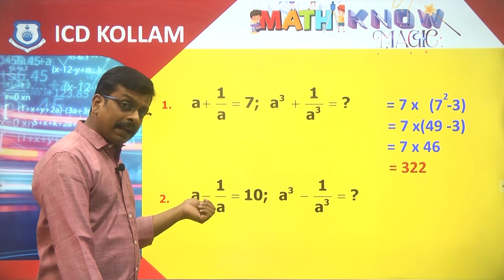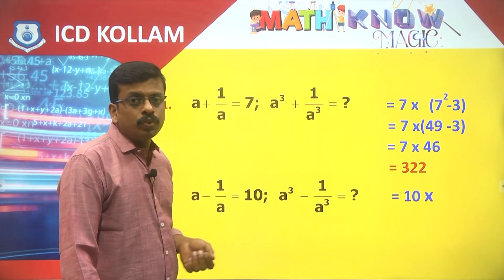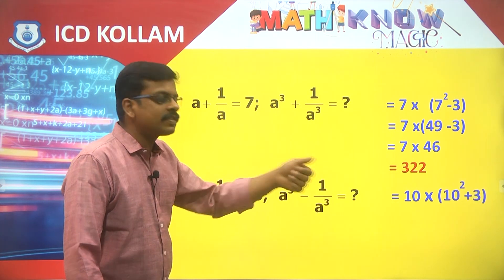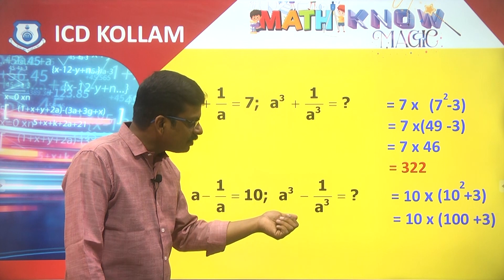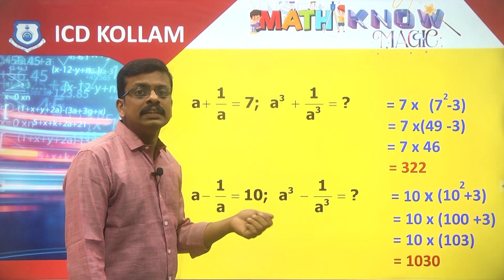So same relation, if it is minus then automatically that side will be plus. 10 into 10 square minus then plus, plus 3, 10 square plus 3, 103. So 10 into 103 is 1030.